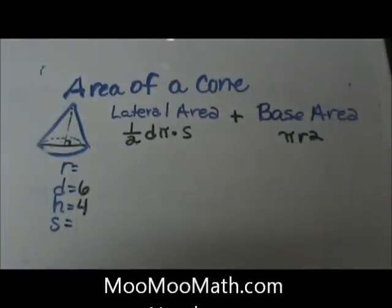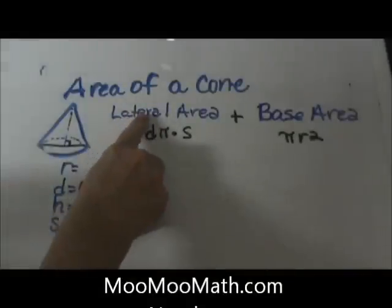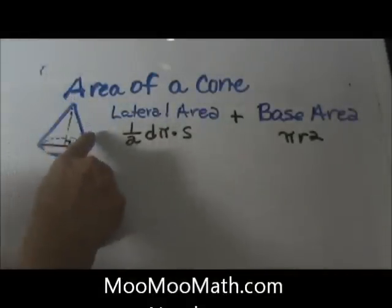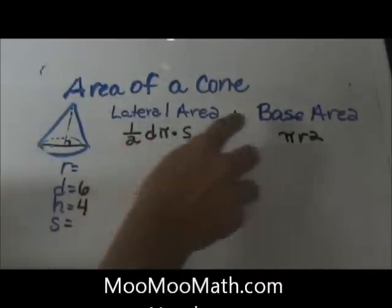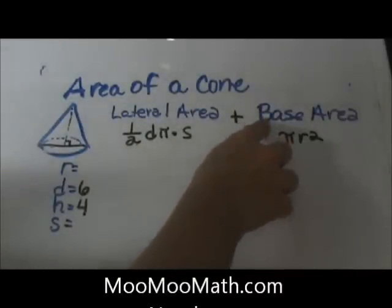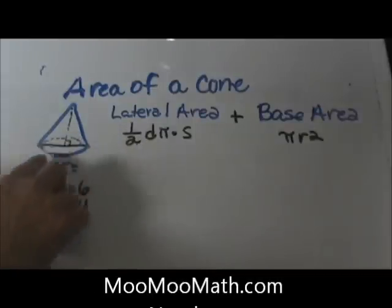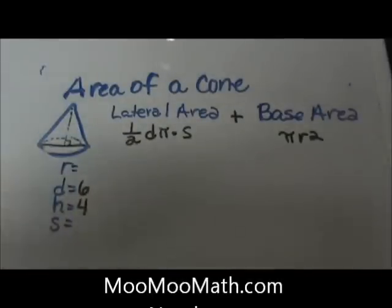A cone has two parts for its surface area. It has the lateral area which is, if you think of an ice cream cone, what you put the ice cream in - it's the sides. Then we're going to add to it the base area which is the circle at the bottom. So it includes two parts.